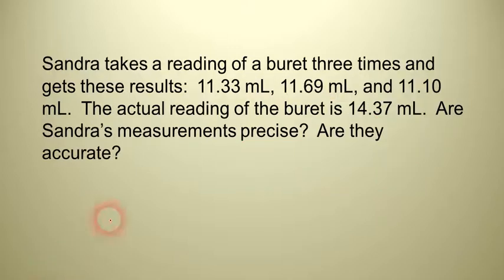Let's look at another example. Here we have Sandra. And she's taking a reading of a burette three times and gets these results. They're all in milliliters. And we know that the actual reading of the burette is 14.37 milliliters. So, we have the same question. Is she precise? Notice that in her results, we don't just have variance in the last digit.